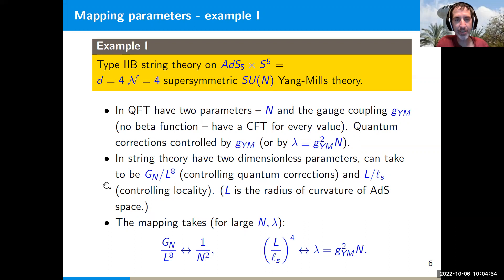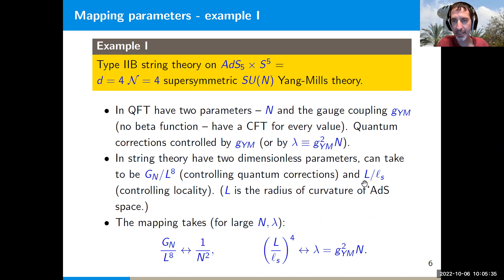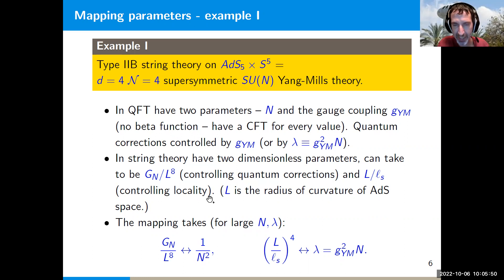On the string theory side there is one dimensionful parameter — the AdS scale — which is just an overall scale, plus two dimensionless parameters. One can be taken as the Planck constant in ten-dimensional Type IIB string theory measured in units of the AdS curvature radius L: specifically G_Newton / L⁸, which controls quantum corrections on the gravity side — gravity loops are an expansion in this parameter. The other dimensionless parameter is the AdS radius in units of the string scale, controlling locality.